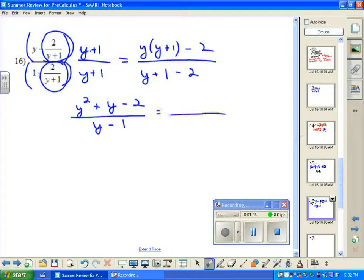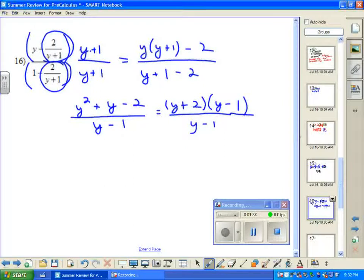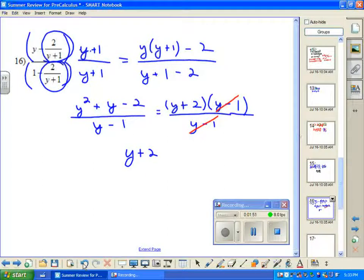Let's factor the numerator just to make sure that nothing in both the numerator and denominator are the same, that we can't do any canceling. Our factors of 2 are 2 and 1, and we want this to be a plus 2 and a minus 1. And actually look here. The y minus 1s are the same in both the numerator and denominator. So our actual final answer is just y plus 2. So that entire complex fraction that we were given at the beginning of the problem simplifies to y plus 2.